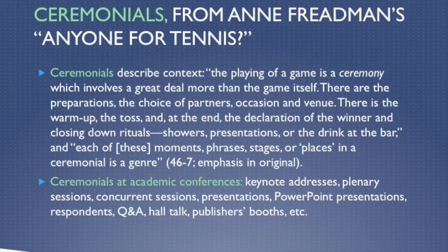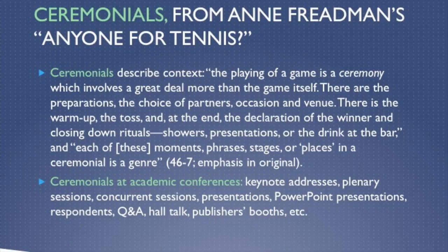Something about the title 'Anyone for Tennis?' — Anne Friedman uses the tennis match as a metaphor for genre. The basic idea is that the exchange of shots is like the exchange of texts between two genres, and the genre is the rules for play that give those shots their meaning: the boundaries of the tennis court, the role of the referee, and so forth. Those shots are meaningless without the rules to mediate them. She says that ceremonials describe context — the playing of the game is a ceremony involving a great deal of work: the preparations, the choice of partners, occasion, and venue, the warm-up, the toss, and at the end the declaration of a winner and the closing rituals. Each of these moments or stages in a ceremonial is a genre.